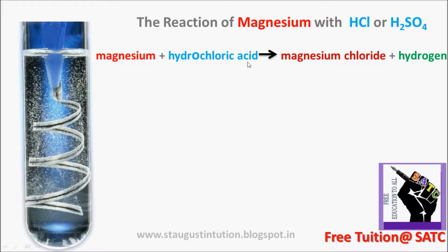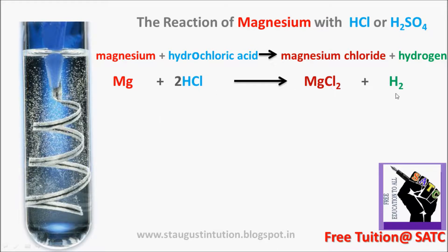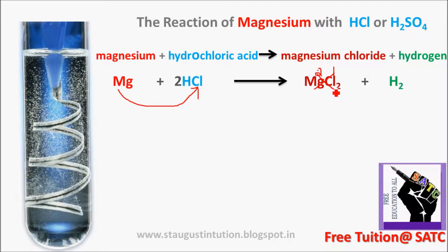Magnesium reacts with hydrochloric acid, HCl, to form magnesium chloride plus hydrogen. The equation is: Mg + 2HCl → MgCl₂ + H₂. The corresponding acid is chloride, so the salt is magnesium chloride.